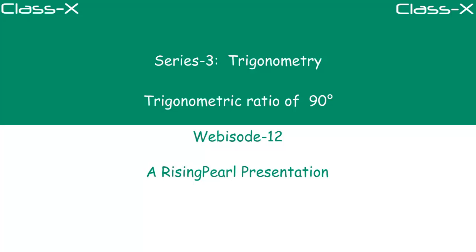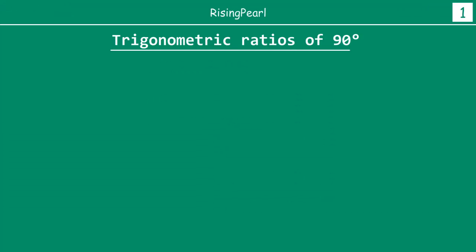Hello friends, welcome to risingpearl.com. Today we are talking about series 3 where we are learning about trigonometry. This is webisode number 12 and today's topic is trigonometric ratios for 90 degree angle. In the last webisode we looked at the values of 6 trigonometric ratios for 0 degrees, and today we are going to find out the values of trigonometric ratios for 90 degrees.